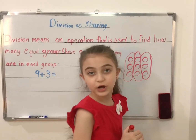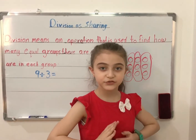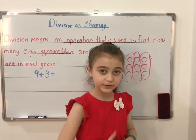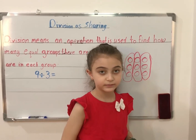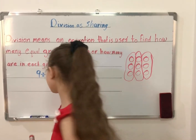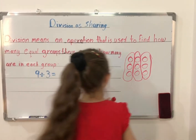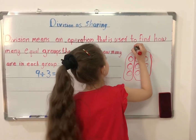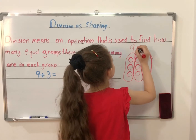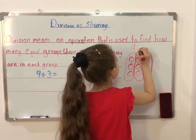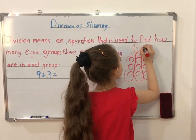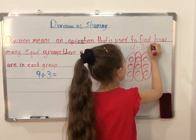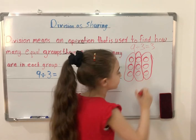So how many in each group? Three! So, 9 divided by 3 equals 3.